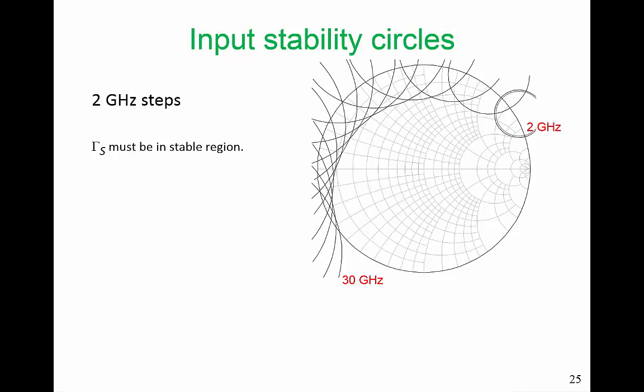First of all, look at the input stability circles. These input stability circles are plotted on the Gamma S plane, and what this is telling us is that Gamma S must be in this region for there to be stability. In fact, it's not that restrictive.